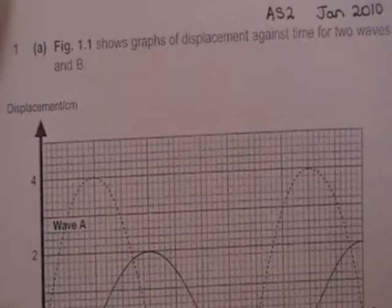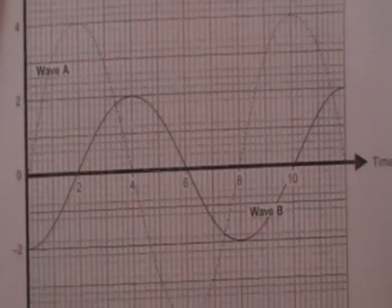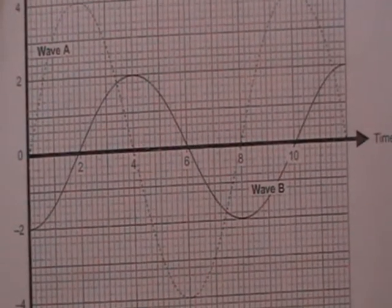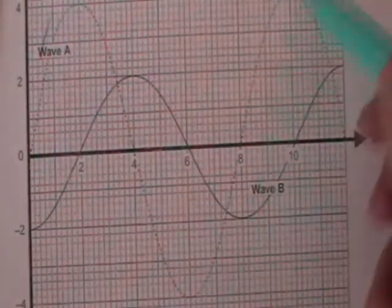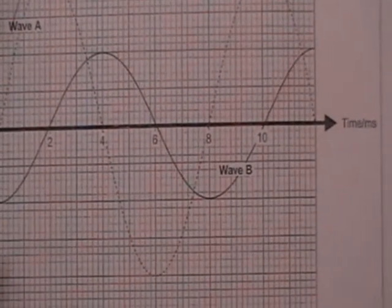So figure 1.1 shows graphs of displacement against time for two waves A and B. I don't know if you can see the whole thing on there or not, but this one here is A and this smaller one here is B. You've got displacement on this axis and time on this axis.